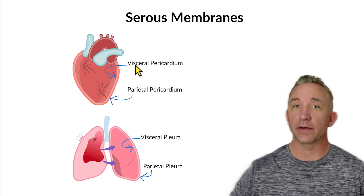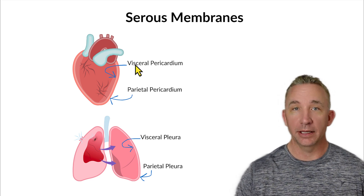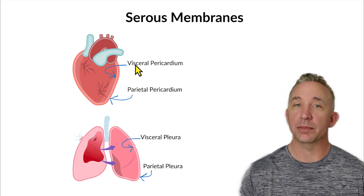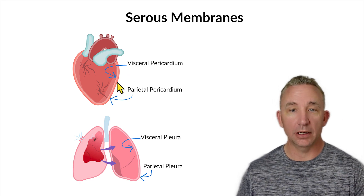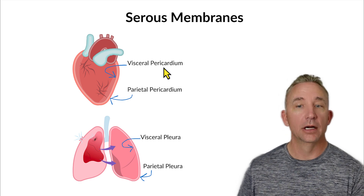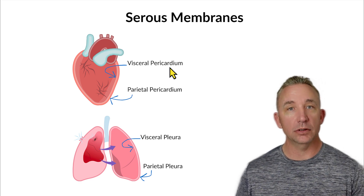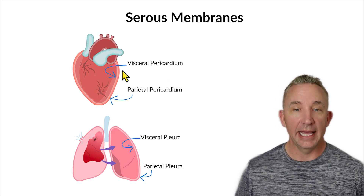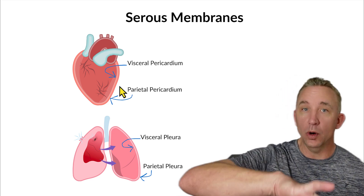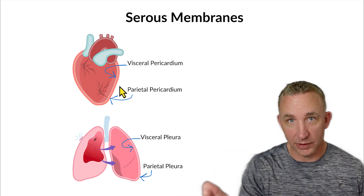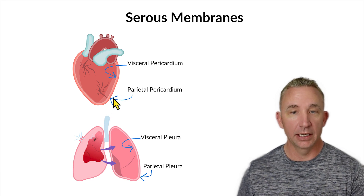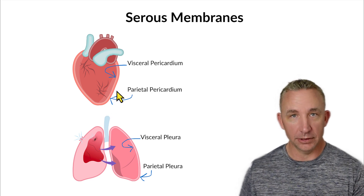Visceral refers to when the membrane is wrapped directly over the top of the organ — like plastic wrap or saran wrap. When we wrap the heart directly, that's visceral. Because we're talking about the heart, we call it pericardium — so visceral pericardium.